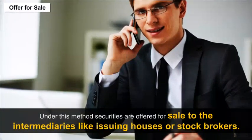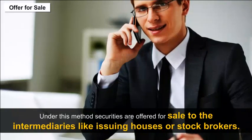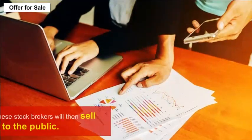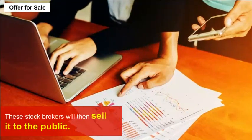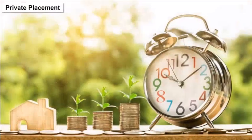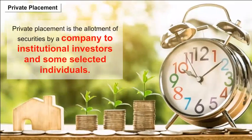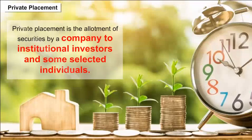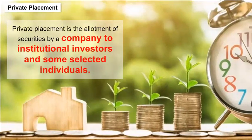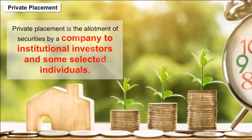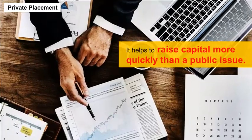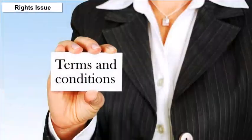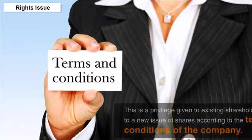Offer for sale — under this method, securities are offered for sale to intermediaries like issuing houses or stockbrokers, who then sell them to the public. Private placement — this is the allotment of securities by a company to institutional investors and some selected individuals. It helps raise capital more quickly than a public issue.